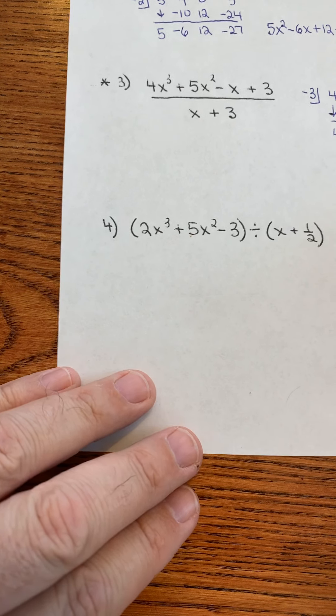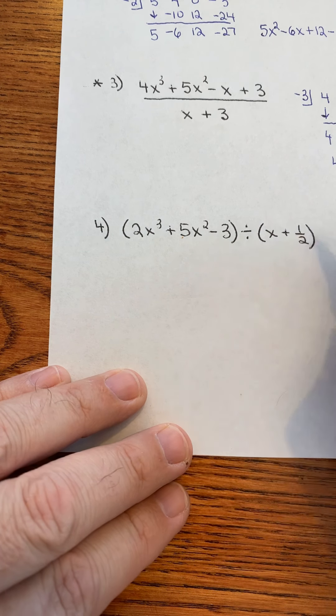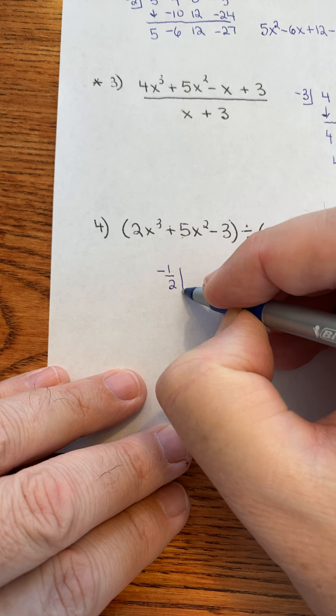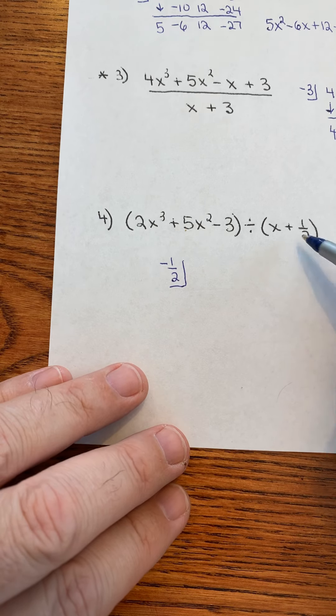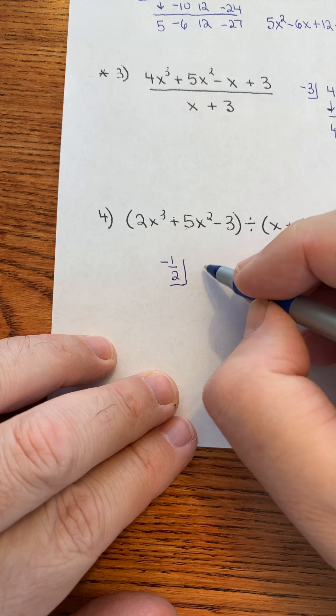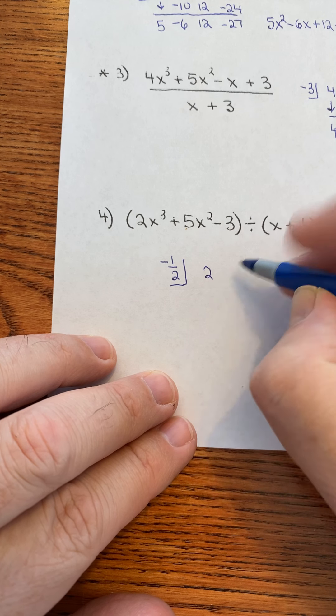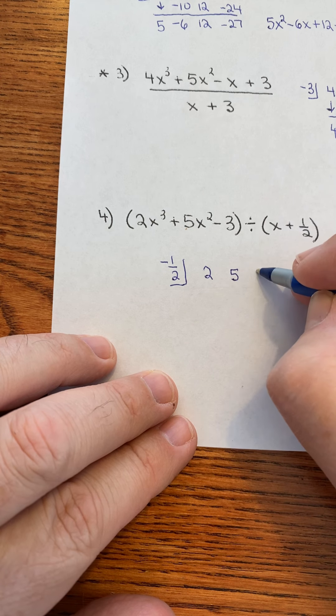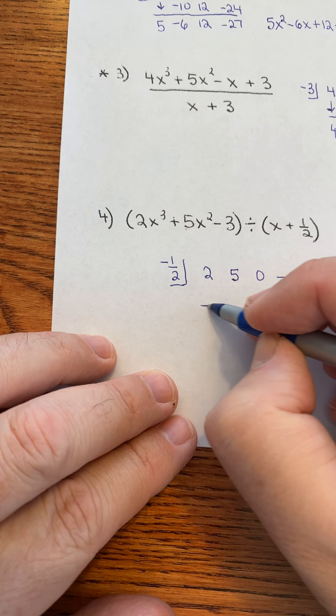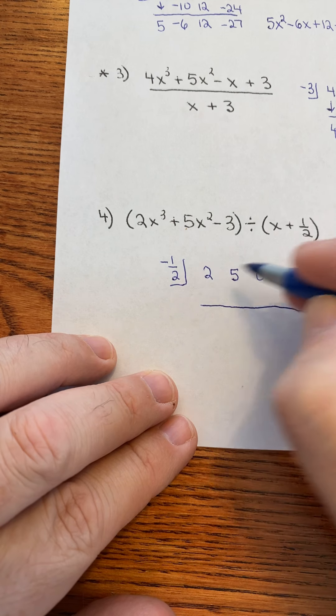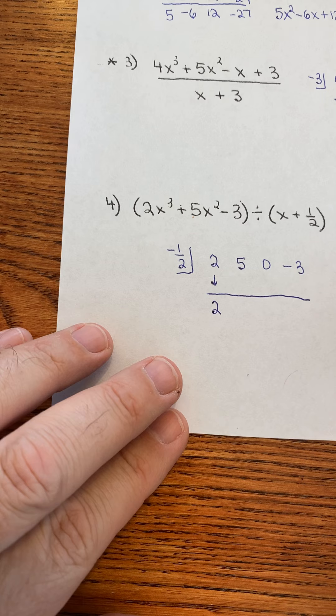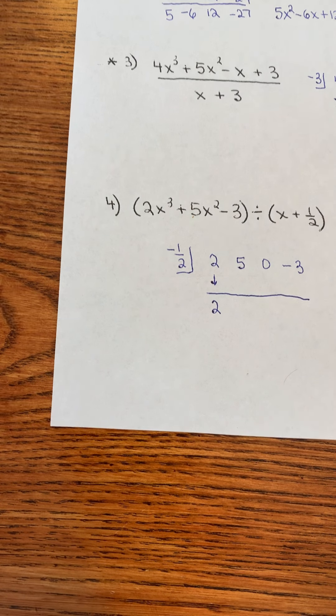All right. Then, the last one I want to go over because it has a fraction. But, that doesn't change the way I do it. I take the opposite of that. It would be negative 1 half. I'll show you someday why we take the opposite. Not today. There is a missing term. I don't see the x to the power of 1. So, I have to put that in there without changing the problem. The only way I can do that is by putting in a 0. Bring down the first term. Or, the leading coefficient is what we call it.